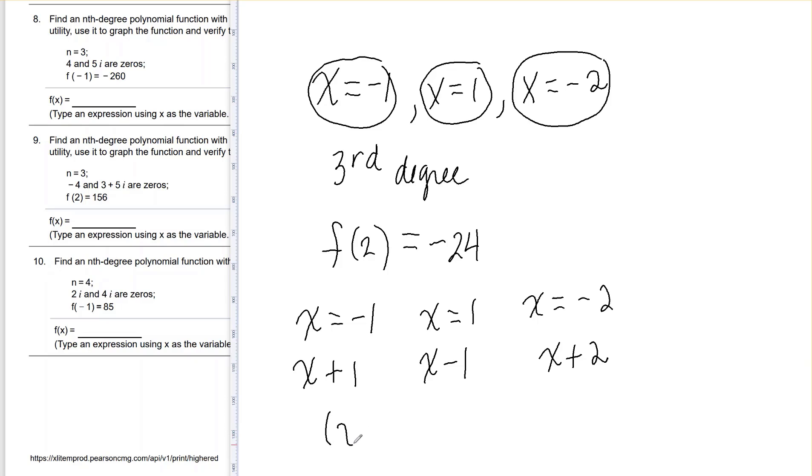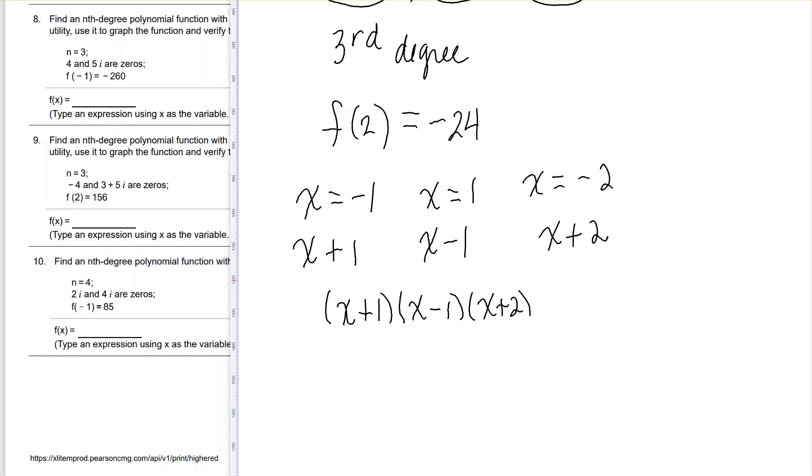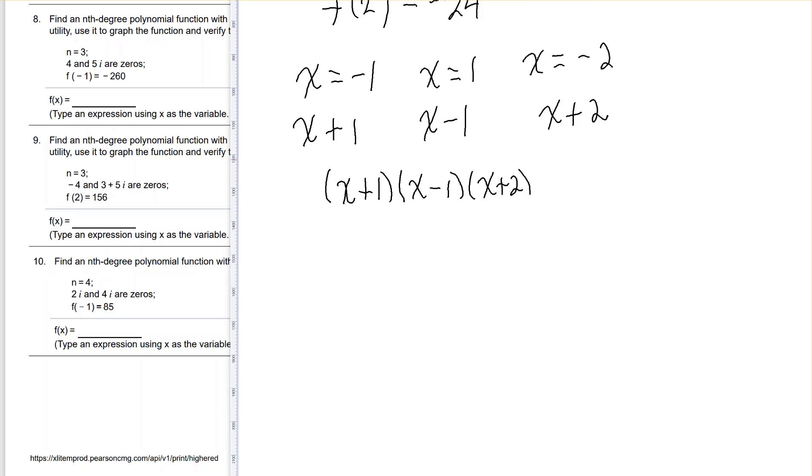Now each of these is a factor of the polynomial if these are roots of the polynomial. And since they're factors of the polynomial, I know that I need to multiply them to find the polynomial. If I multiply these first two, I get x squared minus x plus x minus 1.